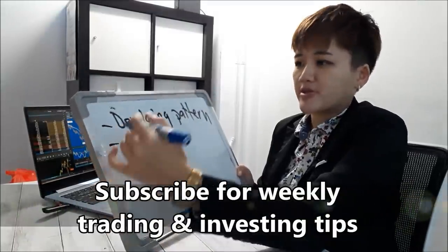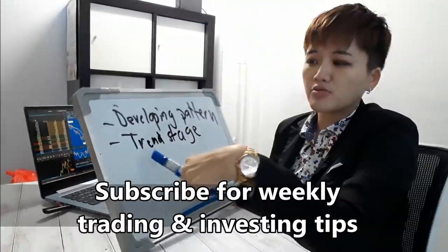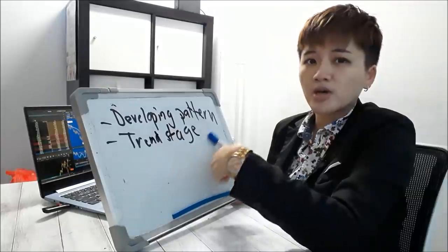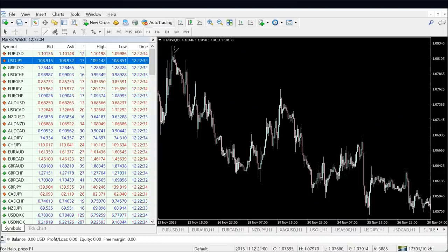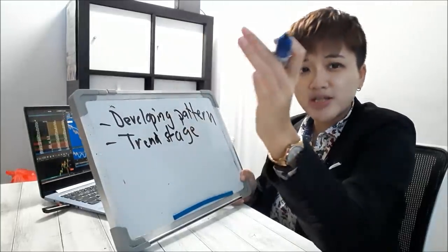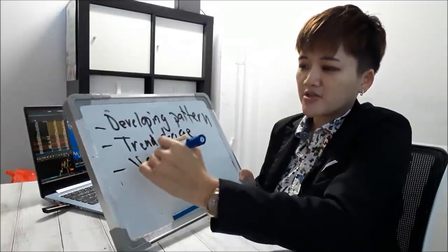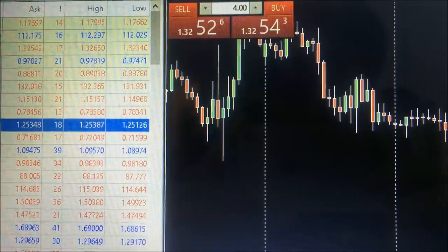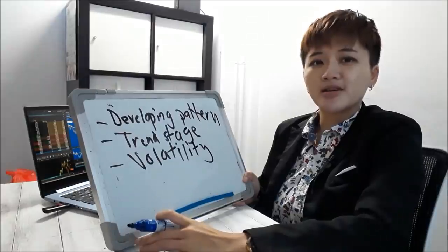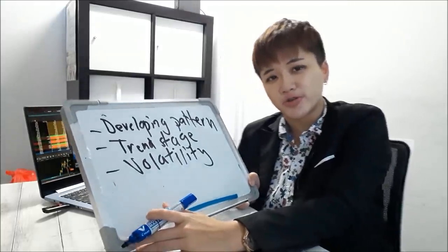The first thing you need to look at is: are there any developing price patterns or chart patterns? Every single time when you trade, you gotta look at which stage of the trend you're in. Are you trading in the middle, end, or early stage of the trend? Or are you trading in a sideways, ranging, unpredictable market? Then check the volatility. Based on the volatility, trend stage, and patterns — are there any opportunities to trade?